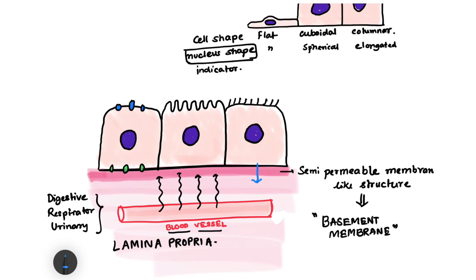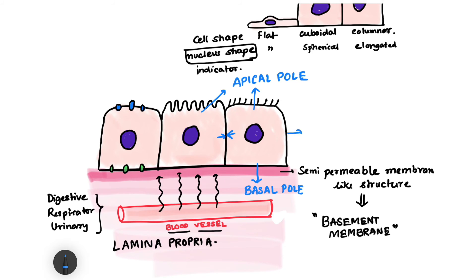The side of the cell facing the basement membrane is known as the basal surface or basal pole. The side facing opposite to the basal pole is known as the apical pole. The remaining surfaces are known as the lateral pole or lateral sides.